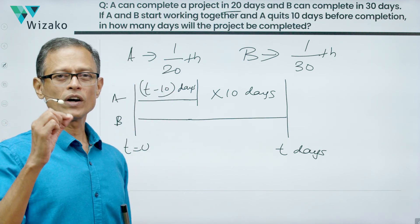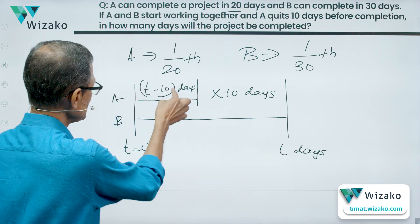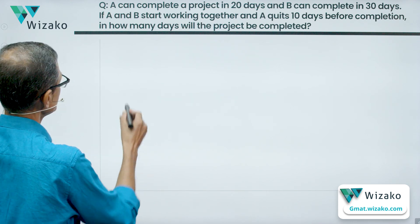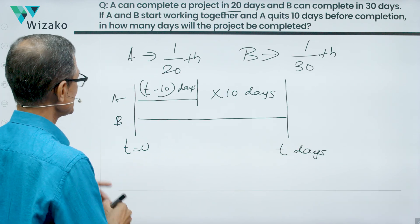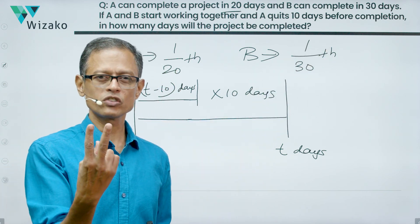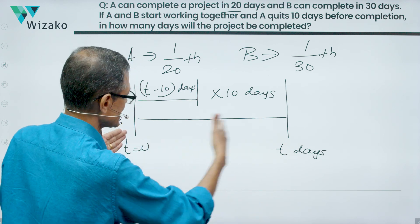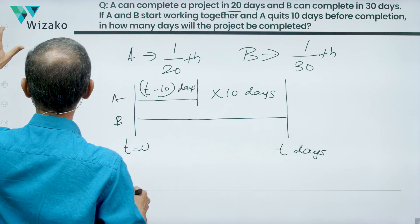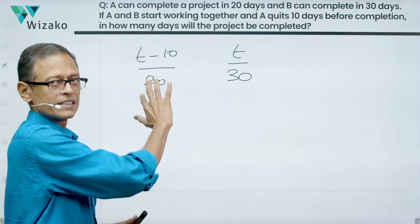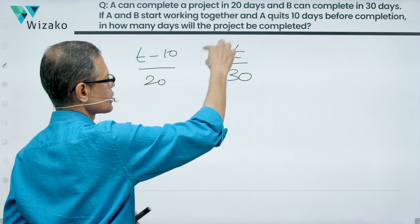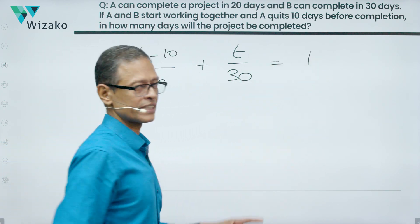In a day, A completes 1/20th of the task. So in 2 days, 2/20th. In 7 days, 7/20th. In T minus 10 days, A will complete (T-10)/20 of the task. In a day, B will complete 1/30th of the task. If B works for 2 days, it will be 2/30th. If B works for 8 days, it will be 8/30th. B works for the entire T days. Therefore, it's going to be T/30 of the task is what B will complete. This is the portion of the project that A works on. This is the quantum of the project that B completes. So together, they have completed the entire project in the T days.